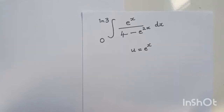Shalom class, my name is Innocent Mapanda. Welcome to episode 2 of integration by substitution. Today we've got the integral of e to the power of x divided by 4 minus e to the power of 2x dx, where ln 3 is the upper limit and 0 is the lower limit.